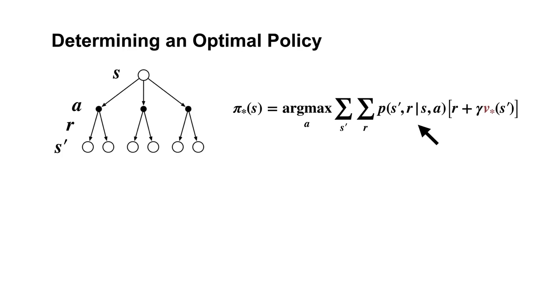Remember that in general, the dynamics function P can be stochastic, so it might not always be so simple. However, as long as we have access to P, we can always find the optimal action from V-star by computing the right-hand side of the Bellman optimality equation for each action and finding the largest value.